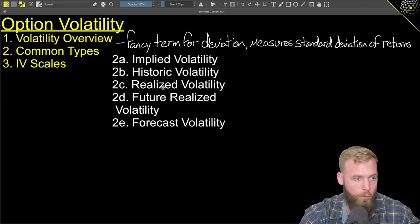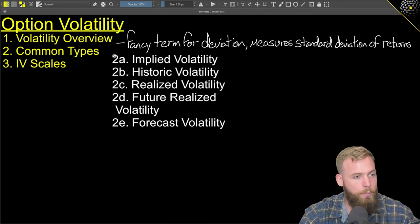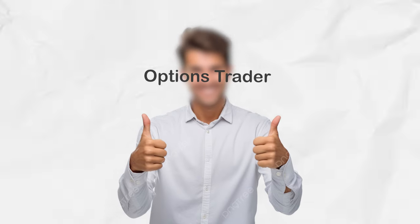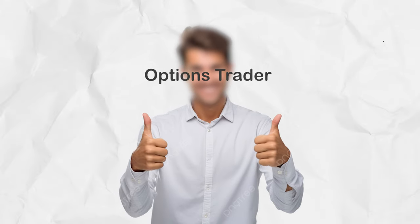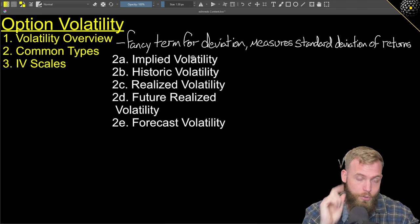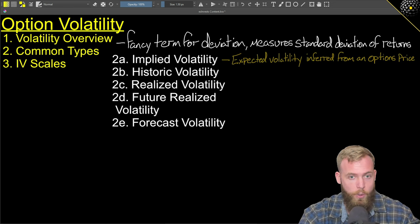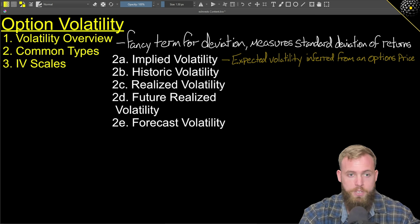So let's talk about the common types of volatility. There is implied, historic, realized, future realized, and forecast. We're going to go through all of these quickly so that you have a working understanding. And then at the end of the video, I'm going to walk you through some of the common scales for implied volatility, because if you're an options trader, it will be important to understand the difference between implied volatility rank and implied volatility percentile, because they're not the same thing. So let's start with implied volatility.